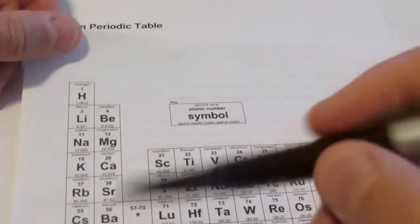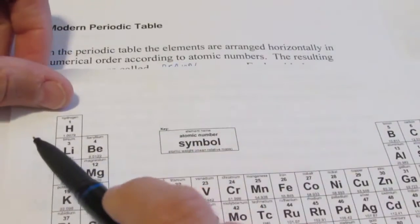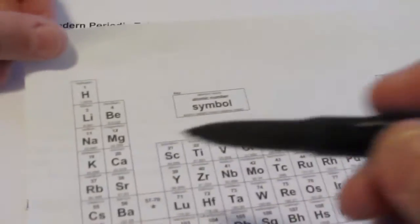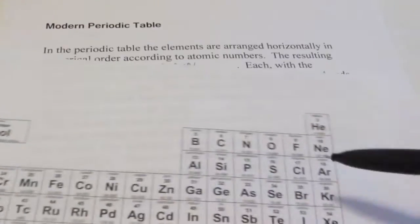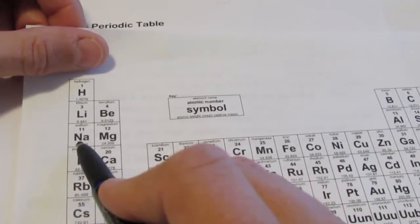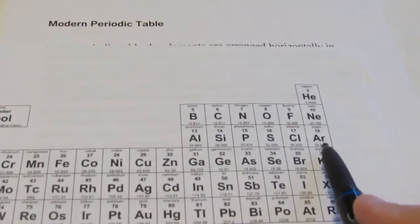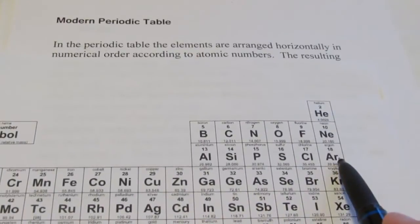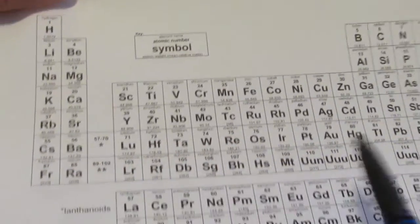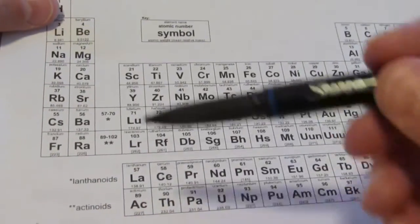Now, the resulting seven rows we call periods. My first period begins with hydrogen and ends with helium. My second period begins with lithium, an alkali metal, and ends with neon, a noble gas. My third period begins with sodium and ends with argon. Once again, beginning with an alkali metal and ending with a noble gas. And that happens with the rest of the rows on the periodic table.